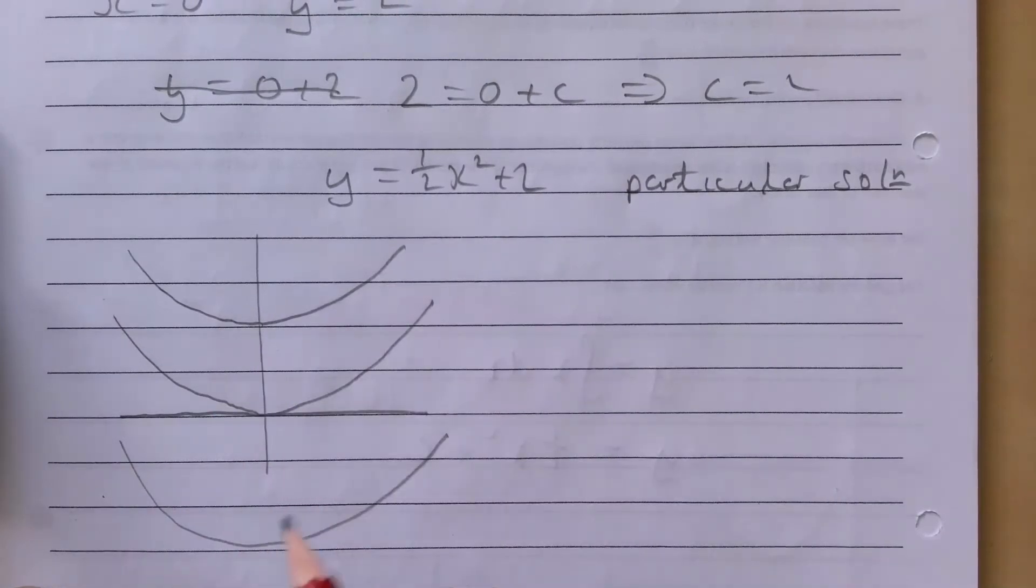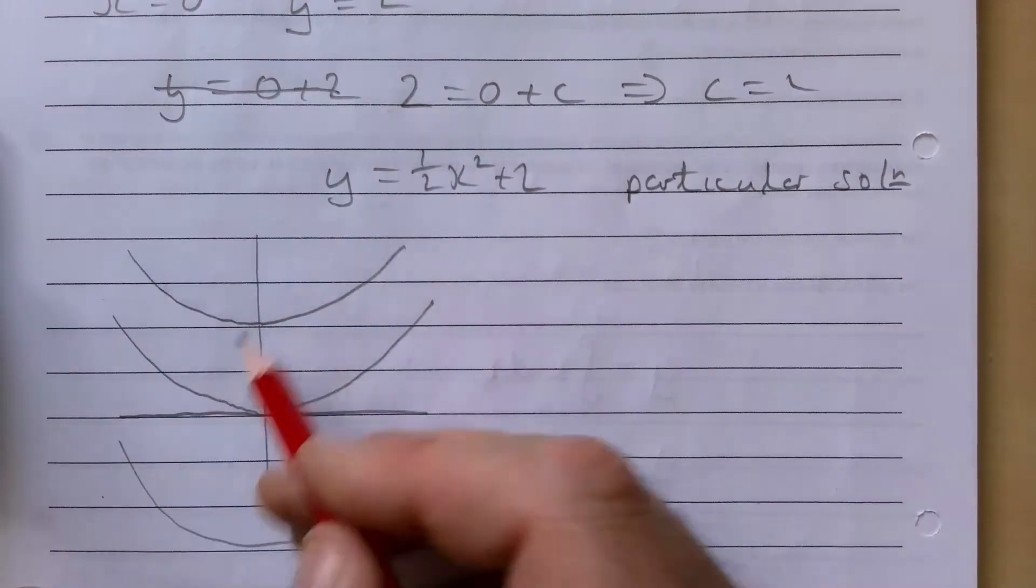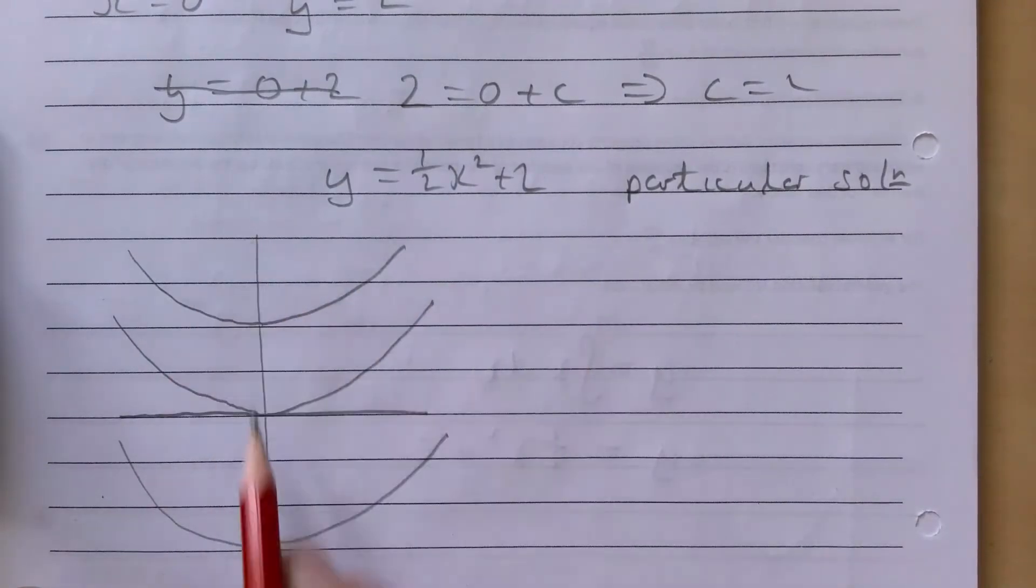This is our family of curves. The general solution could generate any one of those. The gradient is the same at any stage, however it depends on where our y-intercept is going to be.